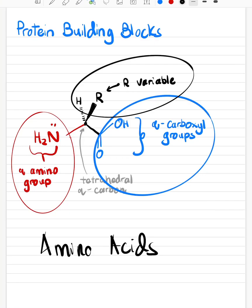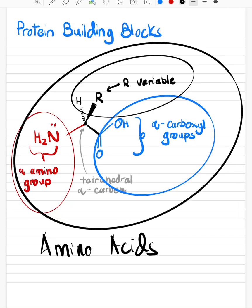Every amino acid we see is going to have the basic generic formula of this structure right here, but the R variable is going to be different and it's going to determine the physical and chemical properties of an amino acid.